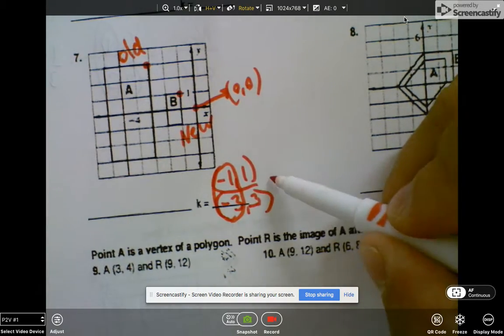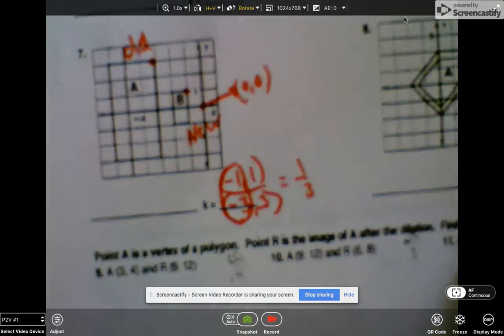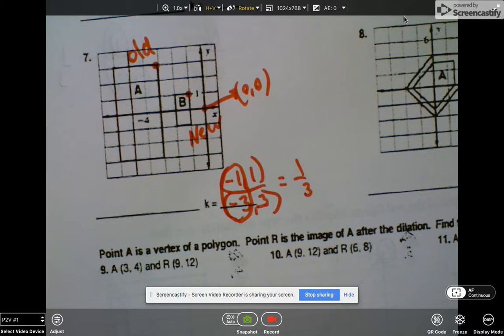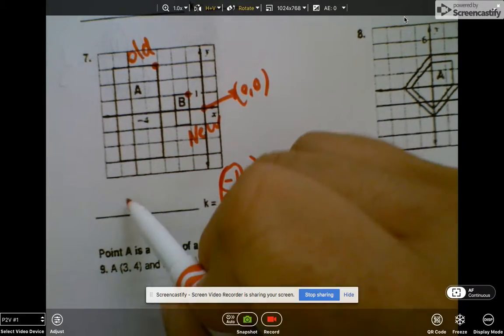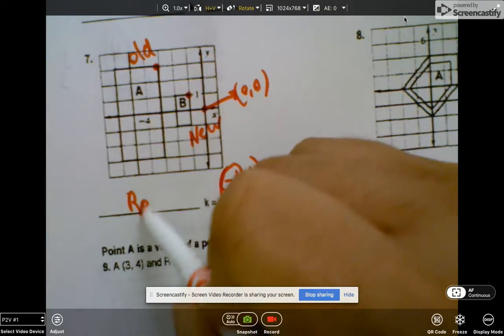Negative one divided by negative three is positive one-third, and the type of scale factor that is, the type of dilation that's less than one. So the scale, the dilation is a reduction, so I'll just put a reduction here.